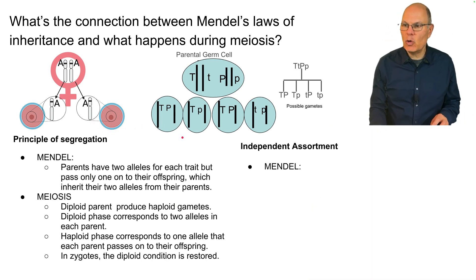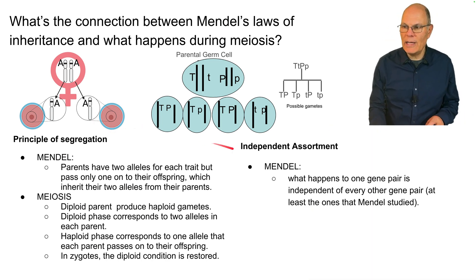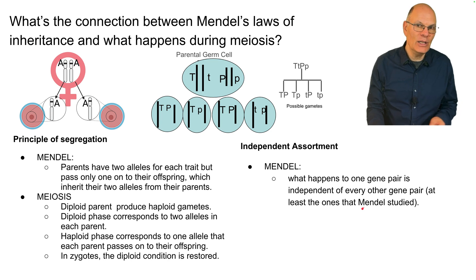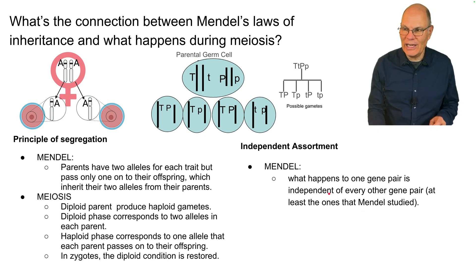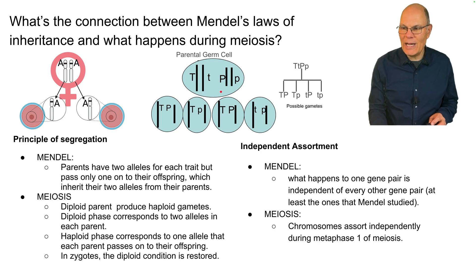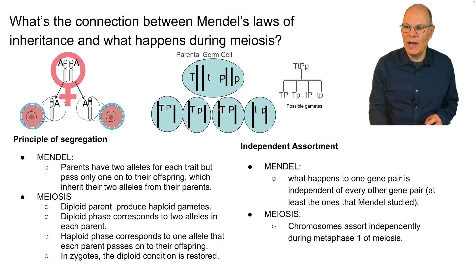According to Mendel, independent assortment means what happens to one gene pair is independent of every other gene pair — at least in the ones Mendel studied. In meiosis, chromosomes assort independently during metaphase I.